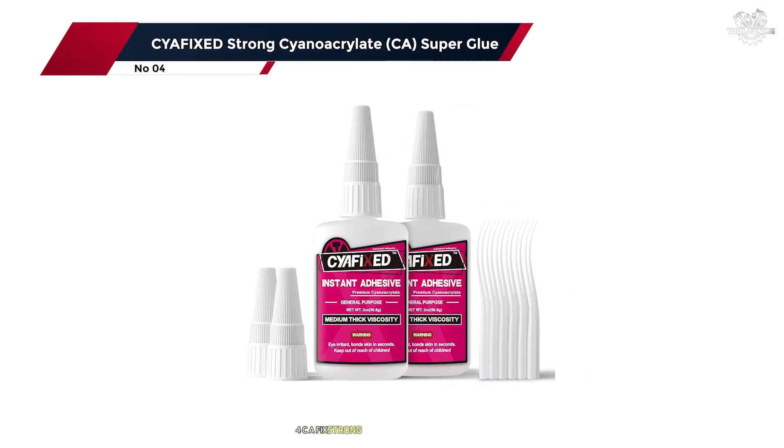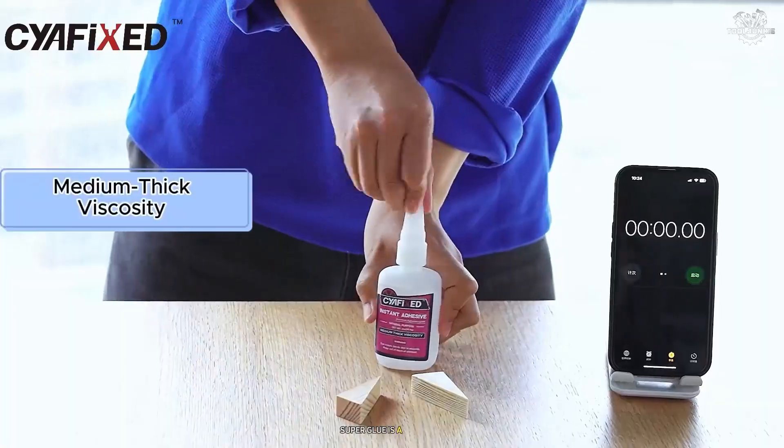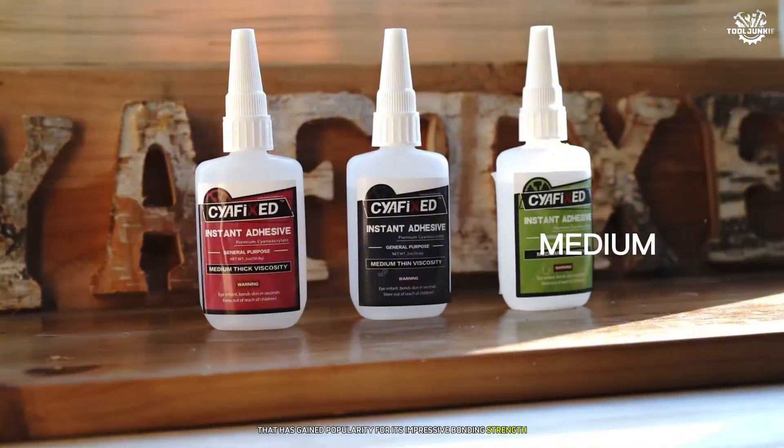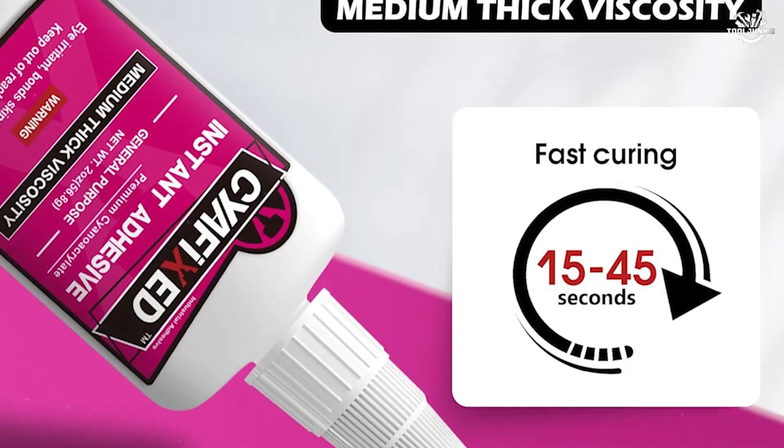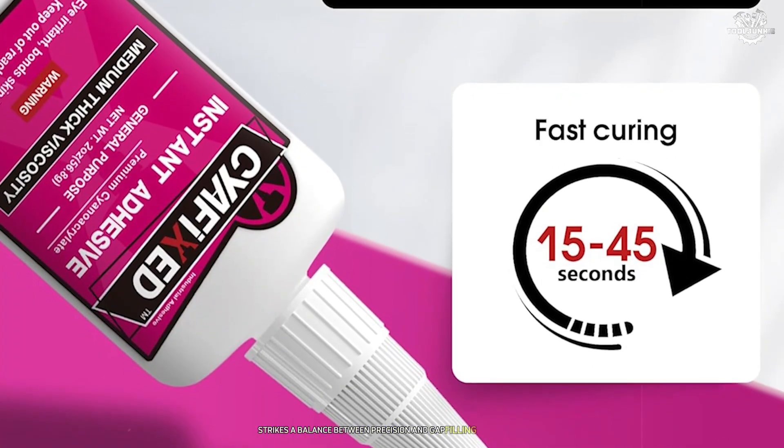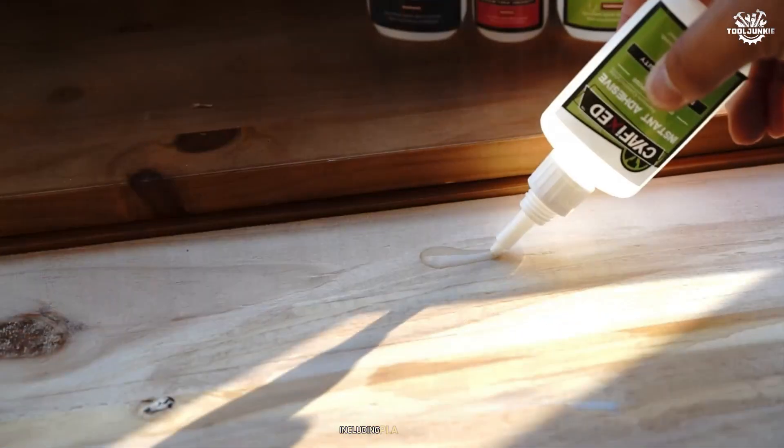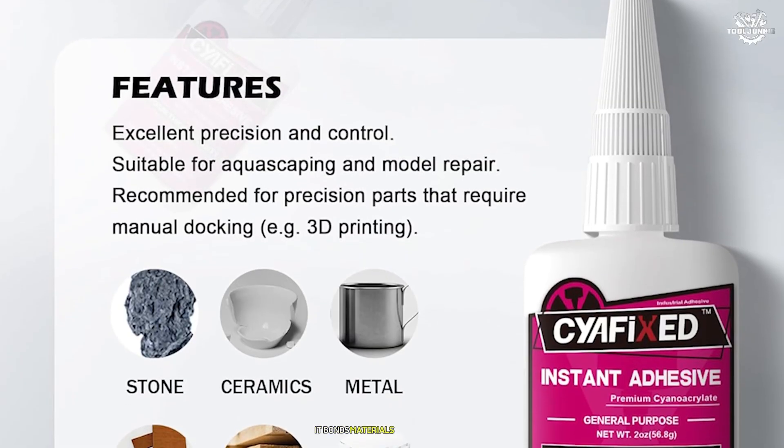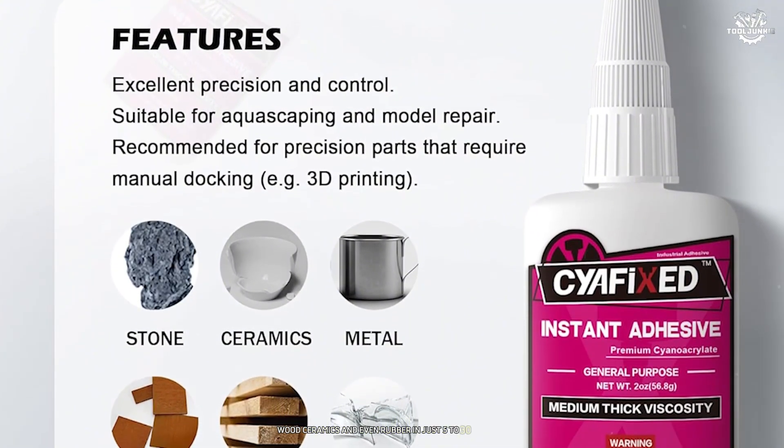Number 4. CiaFix Strong Cyanoacrylate CA Super Glue. The CiaFix Strong Cyanoacrylate CA Super Glue is a versatile and high-performing adhesive that has gained popularity for its impressive bonding strength and quick curing time. With a medium viscosity of 100 cps, this glue strikes a balance between precision and gap-filling capabilities, making it suitable for a wide range of applications, including PLA 3D printing, general repairs and crafting. It bonds materials like plastic, metal, wood, ceramics, and even rubber in just 5 to 30 seconds.